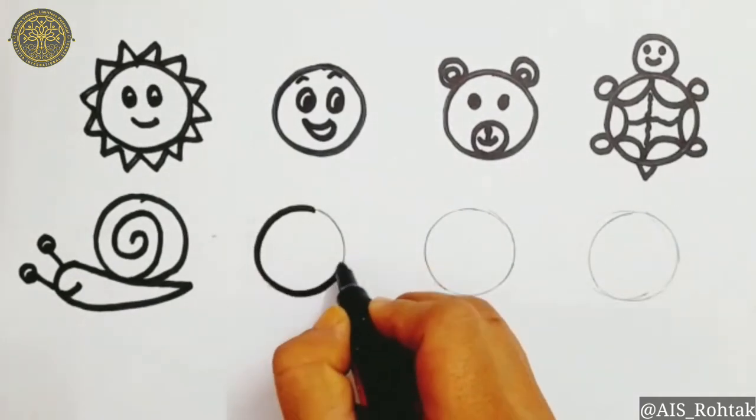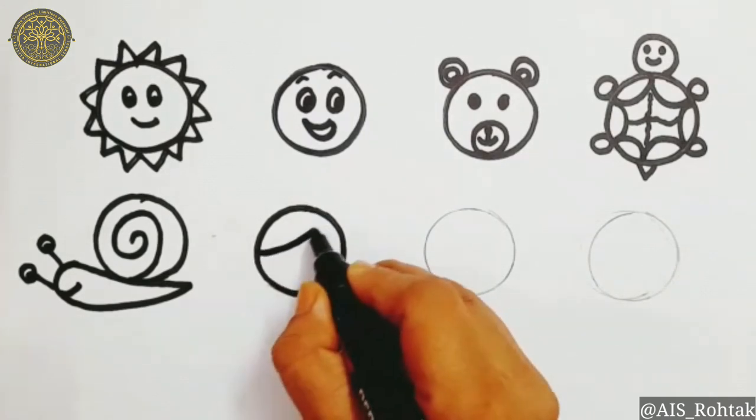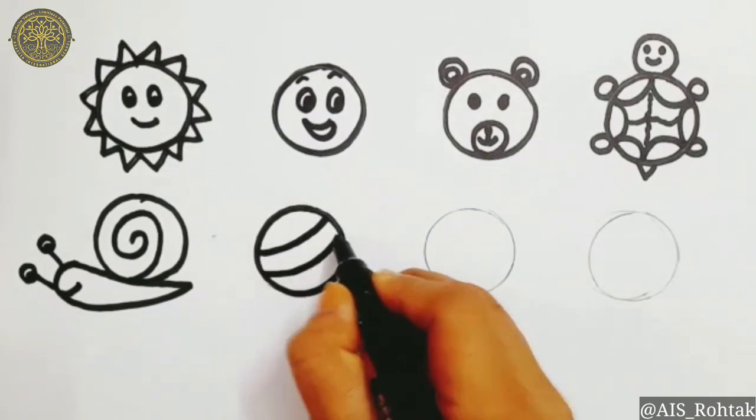Now come to the next circle. Do outline. And then draw two curves. Our ball is ready.